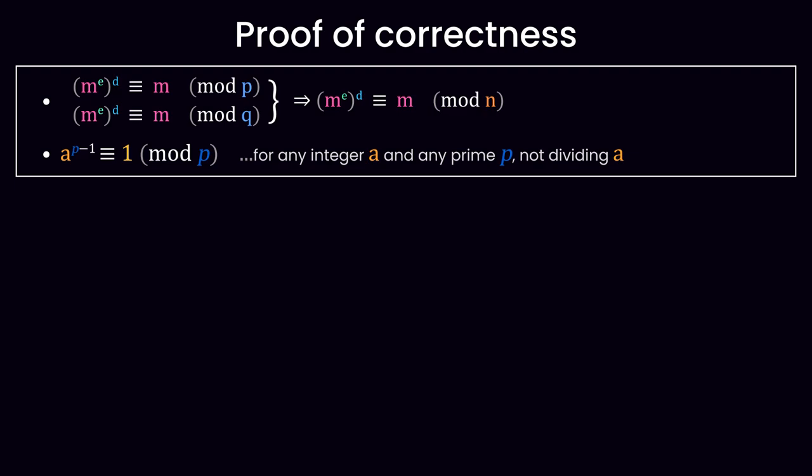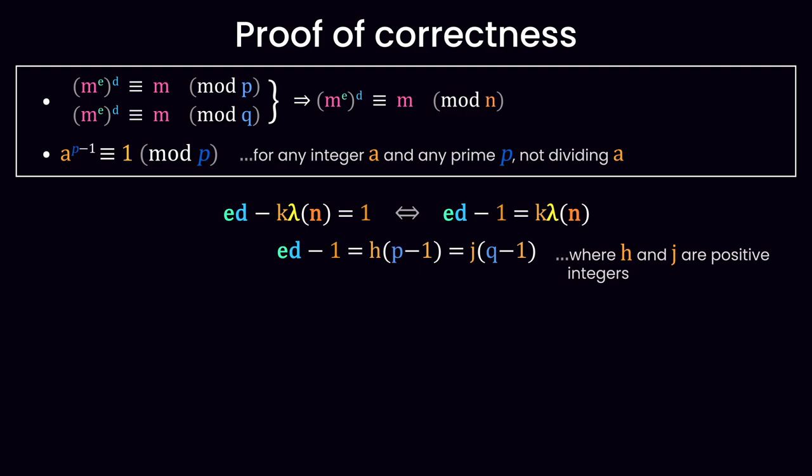Let's use these properties to prove that the RSA equation works with the numbers we generate. As stated earlier, d satisfies this equation, which we can rewrite like this. Therefore, e d minus 1 is a multiple of lambda of N, which by definition is a multiple of p minus 1 and q minus 1. e d minus 1 can therefore be written as h multiplied by p minus 1 and as j multiplied by q minus 1, where h and j are positive integers.